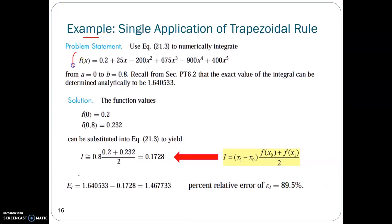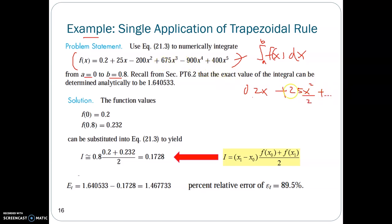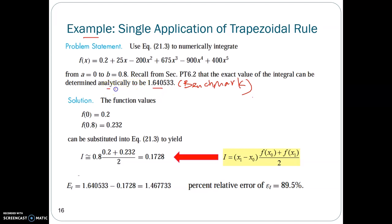Let's try an example. You have a polynomial function and want to integrate it from a equals 0 to b equals 0.8. You can obtain the actual answer by integrating analytically with respect to a and b. After integrating and substituting the limits 0.8 and 0, you should obtain the answer to be 1.64. This actual answer obtained by analytical integration will be used as the benchmark result.